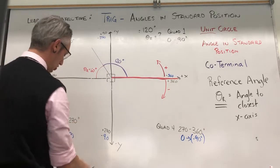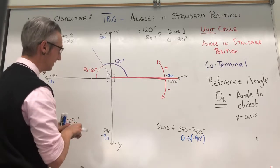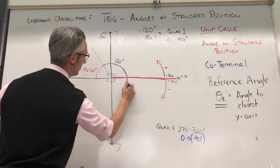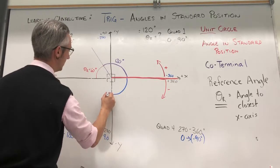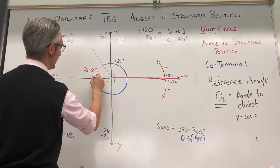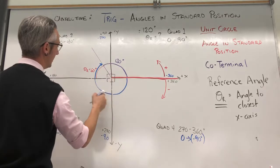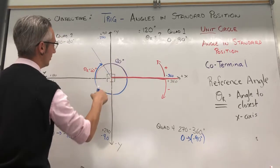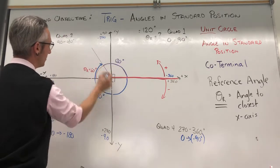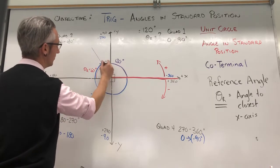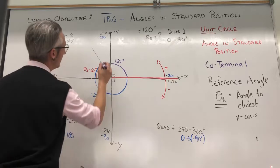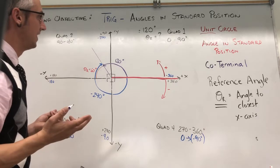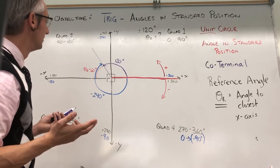My coterminal angle is the angle if I go the opposite direction. So if I go the opposite direction, I go negative 90, negative 180, and negative 180 with another negative 60, giving me negative 240 degrees. So these are coterminal angles — they share the same terminal arm but get there in a different way. One is moving in the positive direction and the other is moving negative.